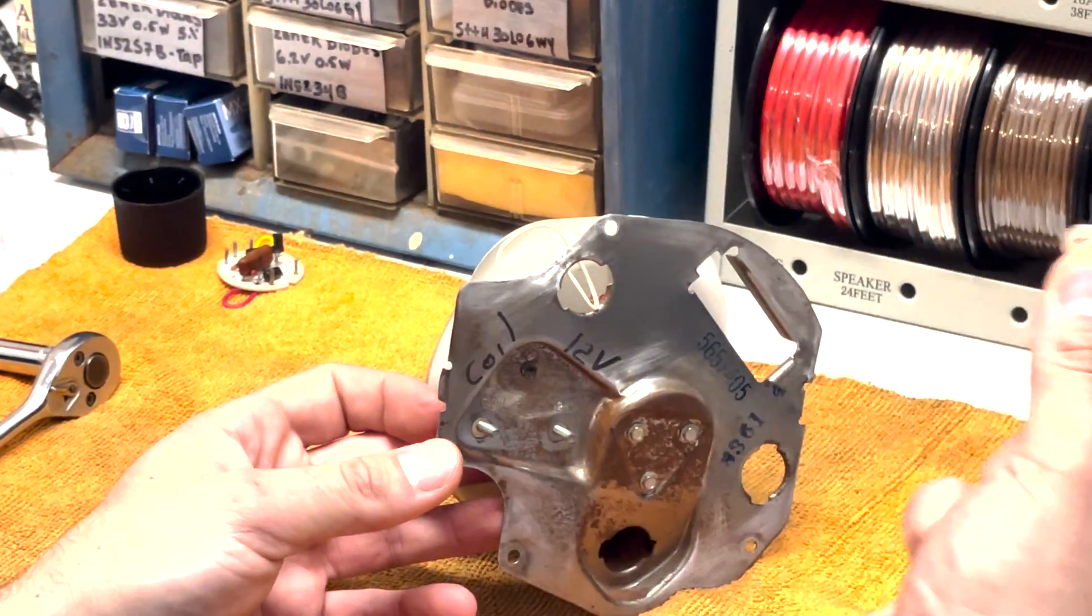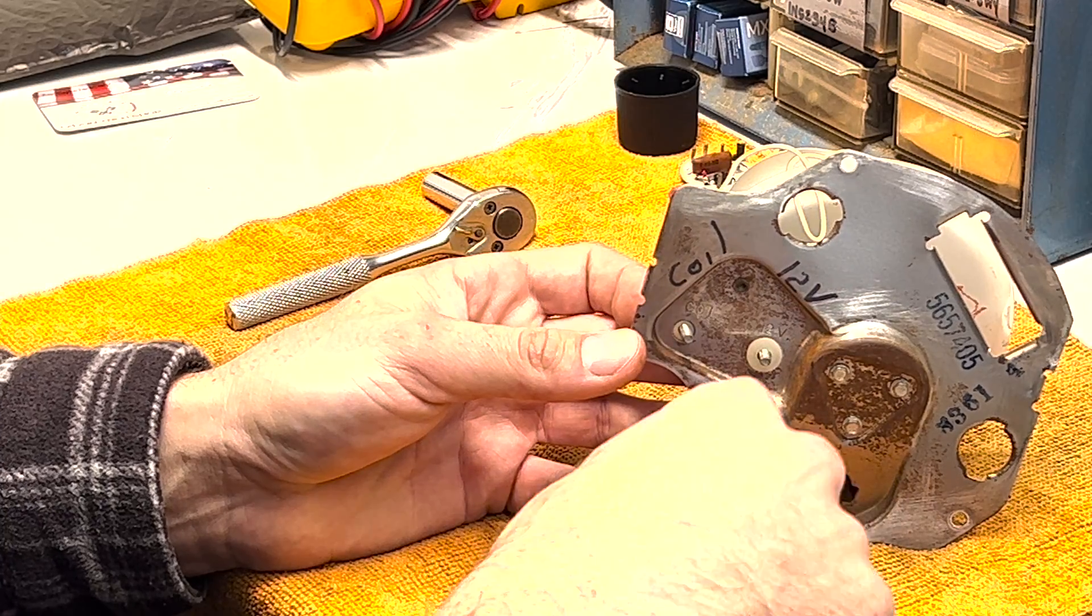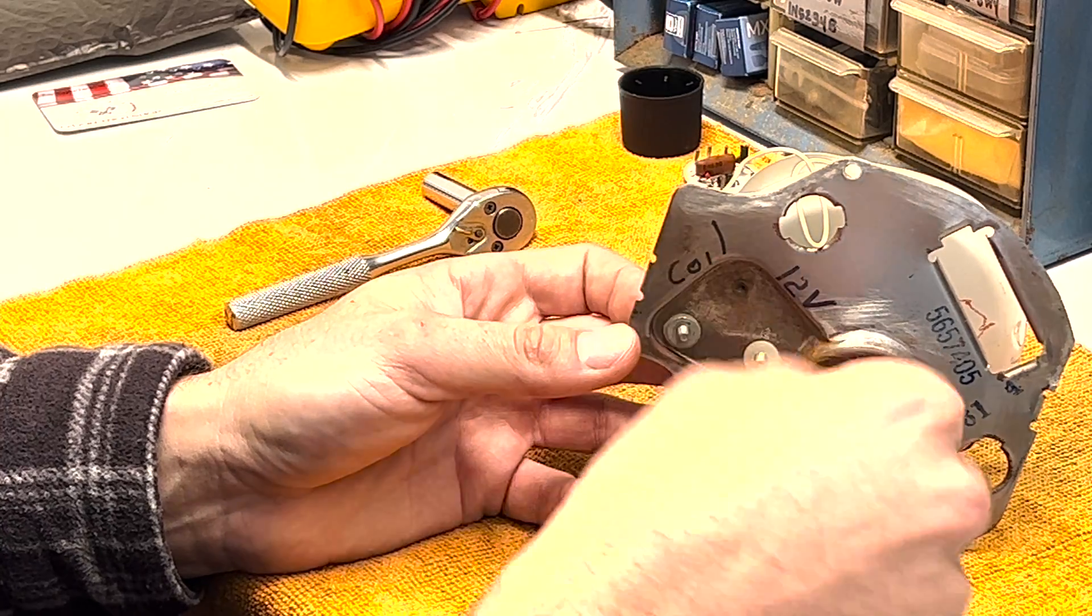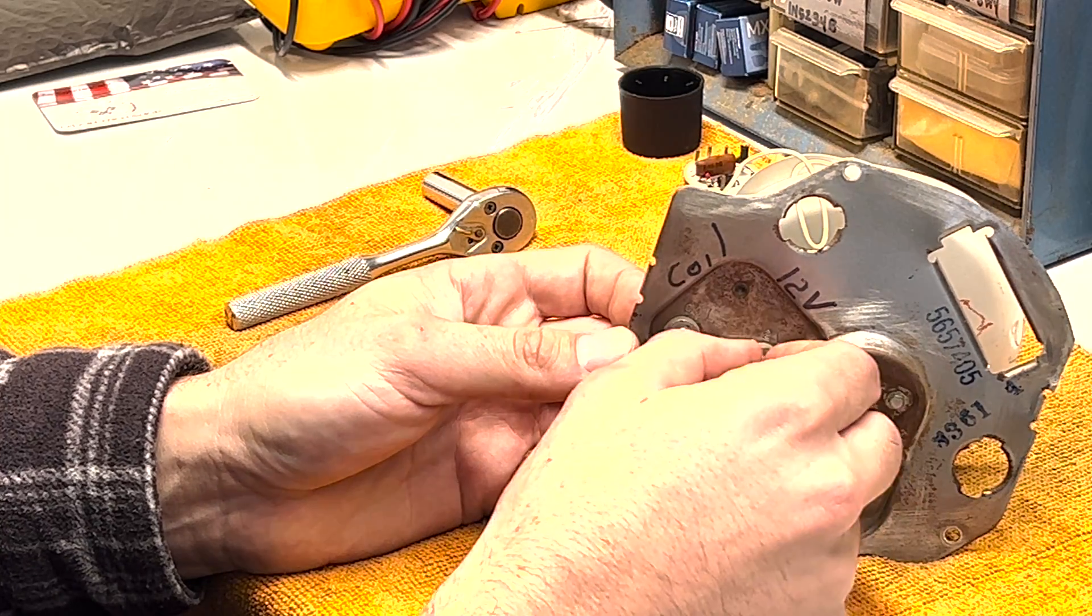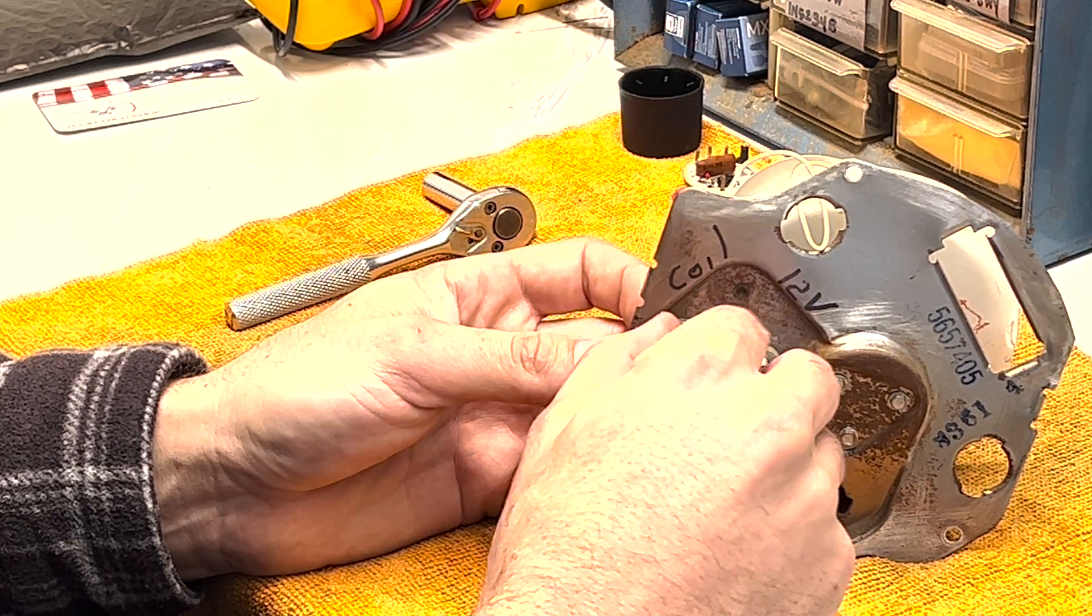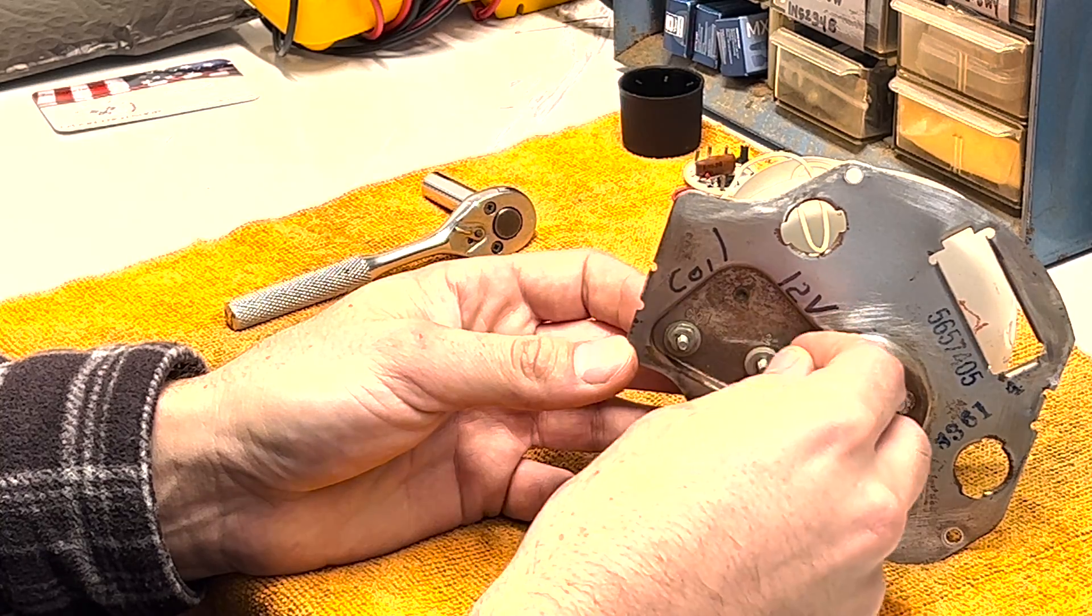So first you want to get your plastic washers, the insulators, put those here. And then the regular flat washers will go here and then your nuts. Thread it on.